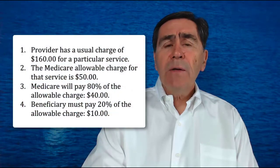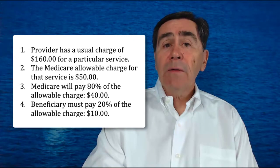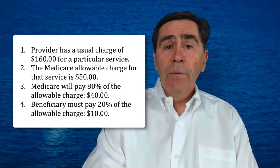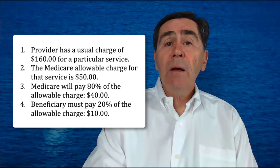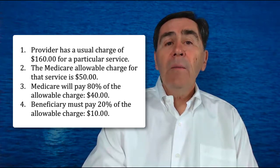Here's an example. The provider has a usual charge of $160 for a particular service. The Medicare allowable charge for that service is $50. Medicare will pay 80% of the allowable charge — $40. The beneficiary must pay 20% of the allowable charge, or $10.